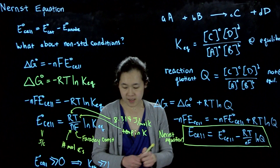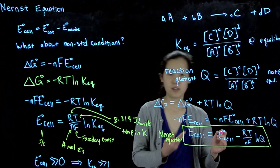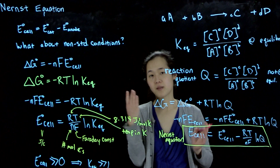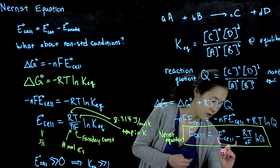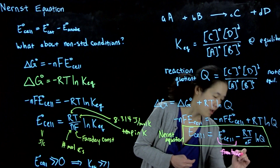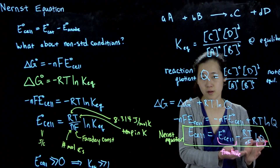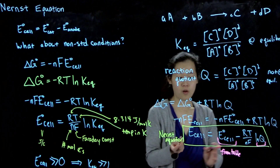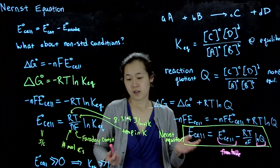What this means is that if we know our standard cell potential — which we can derive or look up from a table by doing a subtraction — and if we know Q, either by measuring concentrations or from a set starting concentration, then we can find the actual cell potential even under non-standard conditions.